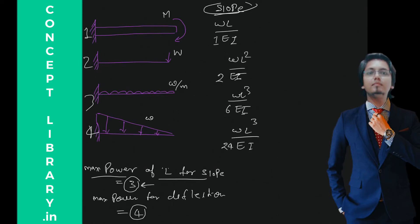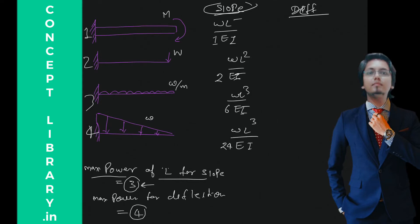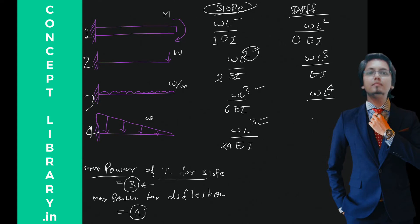Now let's see deflection — again very easy. For deflection, you do the same thing but increase the powers of L by one. So it becomes: wL²/EI, wL³/EI, wL⁴/EI, and wL⁴/EI. Now let's work out the numbers.